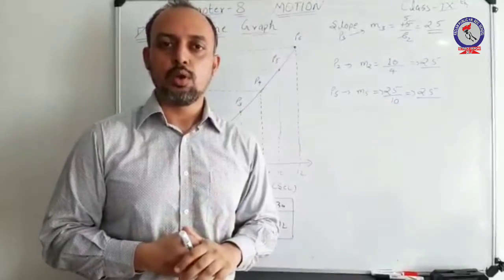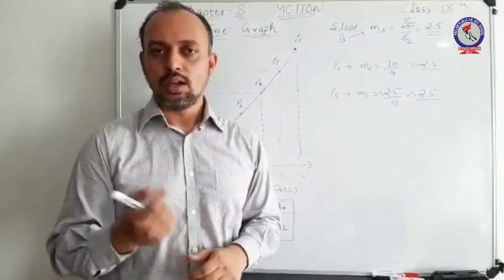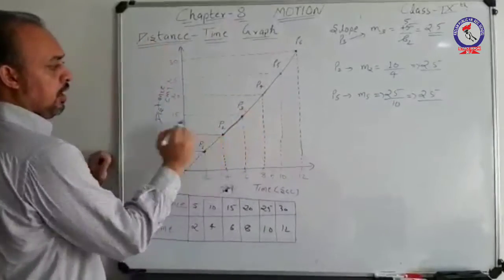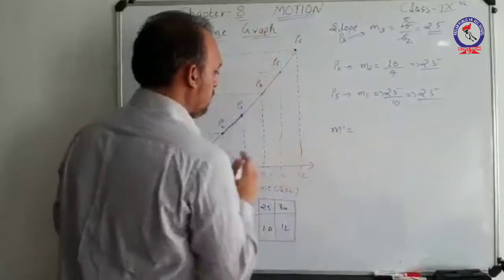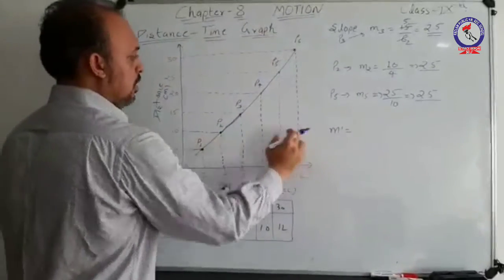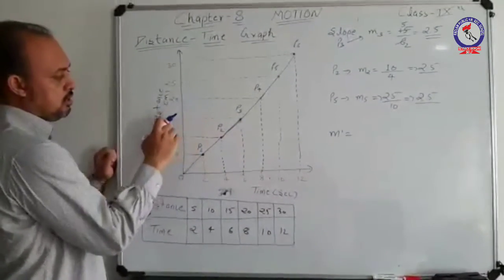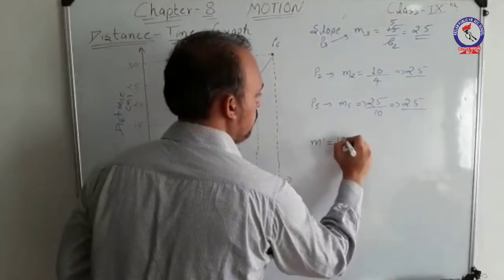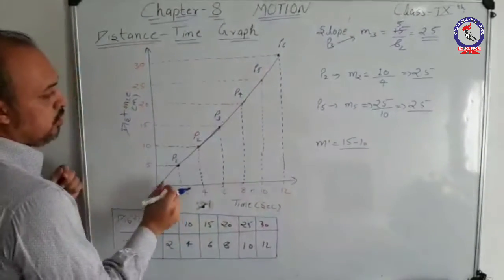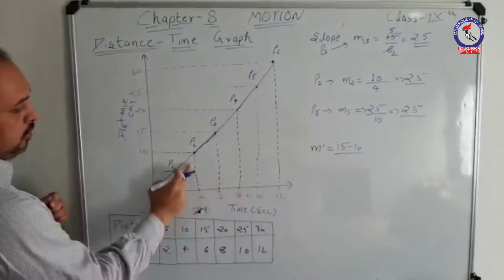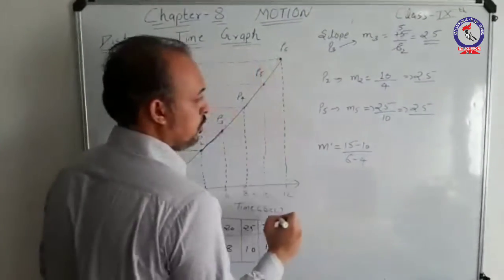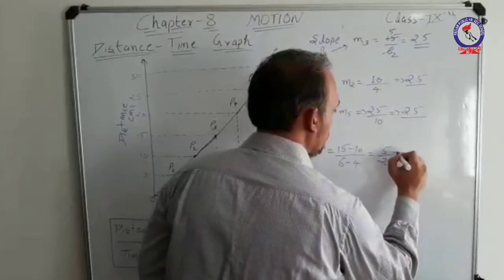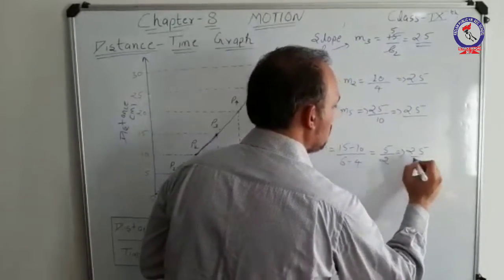There is another way to calculate the slope — by taking any two consecutive values. Let us take points p3 and p2, and call this slope m'. The corresponding values on the distance axis are 15 and 10. Therefore, 15 minus 10 equals 5. Corresponding time values are 6 and 4, so 6 minus 4 equals 2. The ratio 5 divided by 2 gives a slope of 2.5.